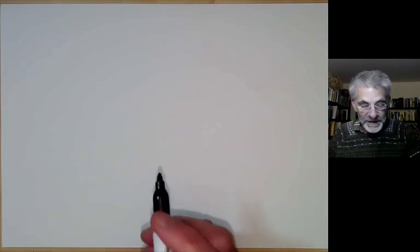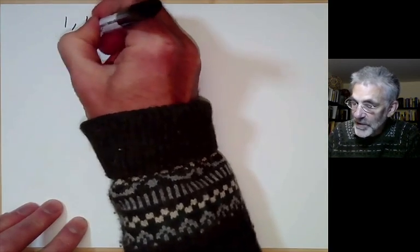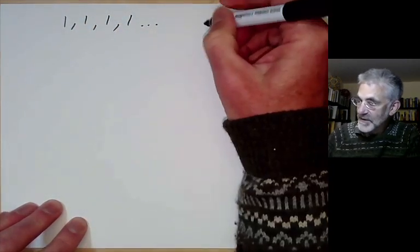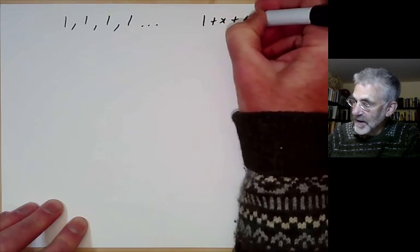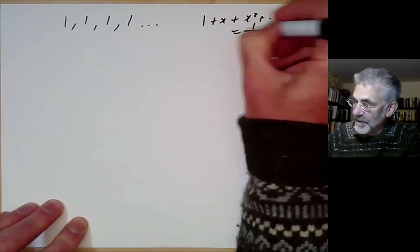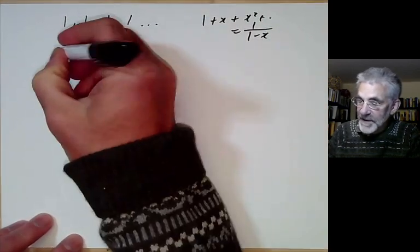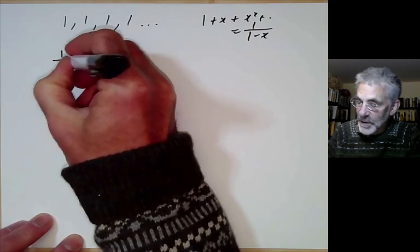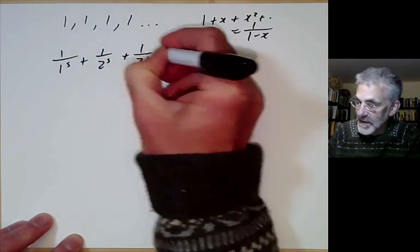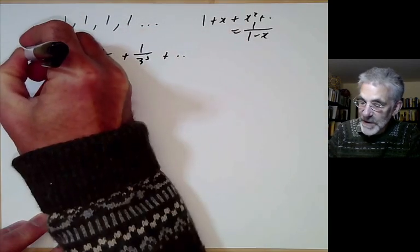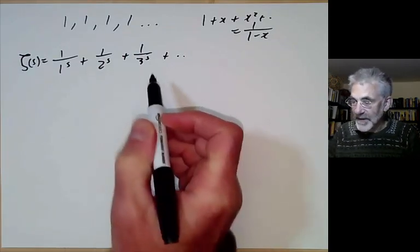The first example: take the sequence 1, 1, 1, 1, … For power series this just gives 1/(1−x), a fairly elementary function. For Dirichlet series we get 1/1^s + 1/2^s + 1/3^s + …, which is the notorious Riemann zeta function, which has caused more headaches than any other function in mathematics.